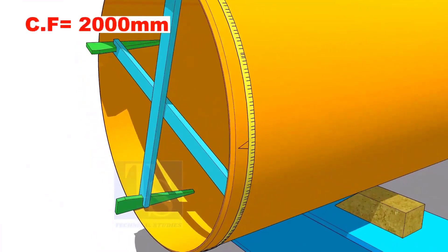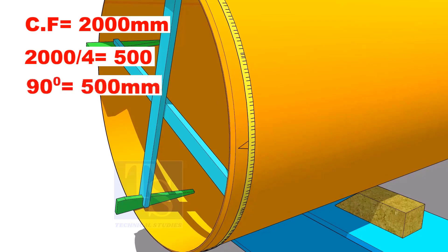Assume that the circumference is 2000 millimeters. Divide it by 4. Now you have the arc length of 90 degrees.